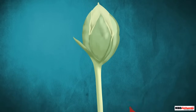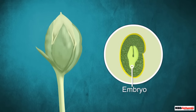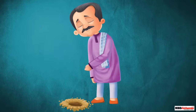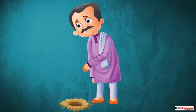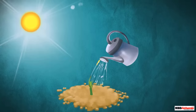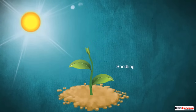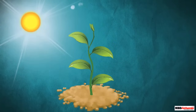At this time, the other parts of the flower like the sepals and petals fall off. So a seed present inside a fruit contains an embryo, which is actually a baby plant. Each time a seed is planted in soil and provided appropriate conditions, it grows into a seedling.